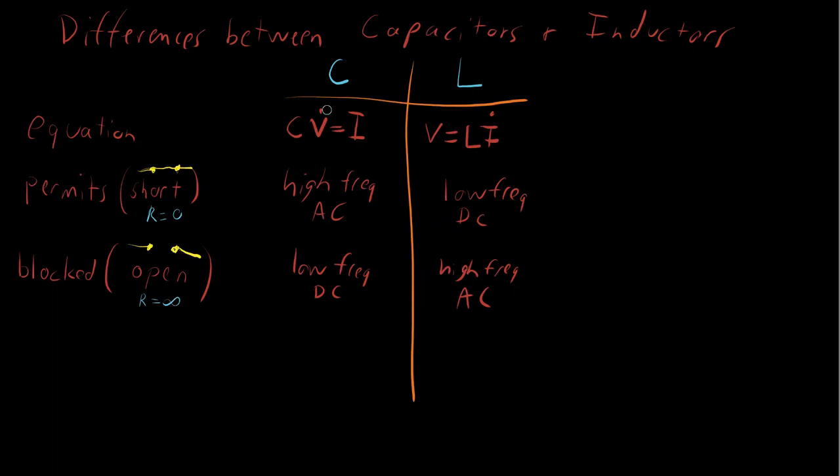So in reality, capacitors and inductors are mirror components where one treats the change in voltage as the key component, and the other treats the changes in current as the key component. And if you can keep this in mind and you keep these ideas about what it permits and what it blocks, what the open and short representations are, then your intuition for how these components behave becomes a lot easier.